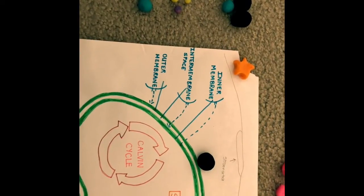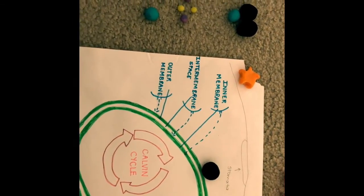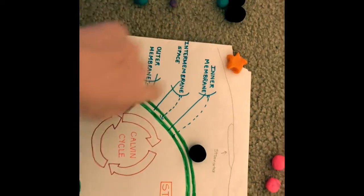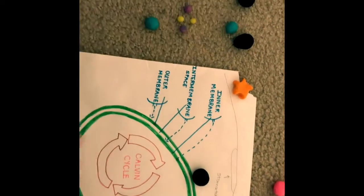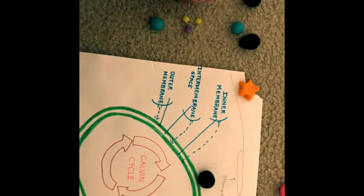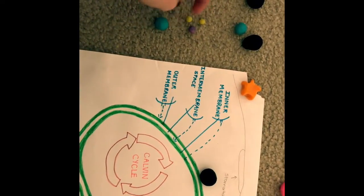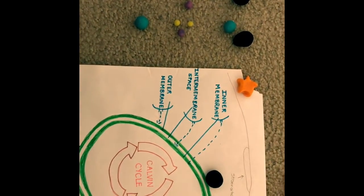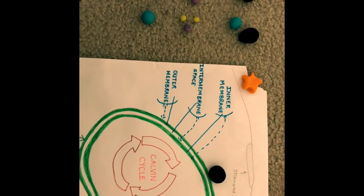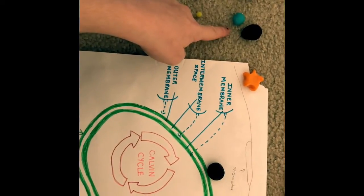The first stage, light reactions, is the steps of photosynthesis that convert solar energy into chemical energy. First, water is split, providing a source of electrons and protons and giving off O2 as a byproduct of photosynthesis. The protons used in the light reaction come from the splitting of the water molecule.